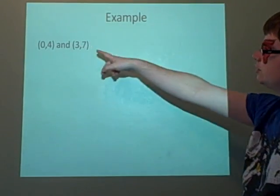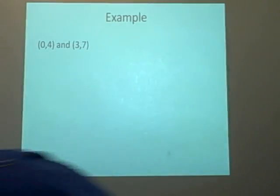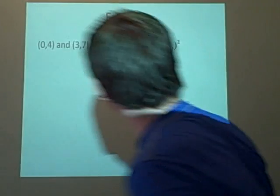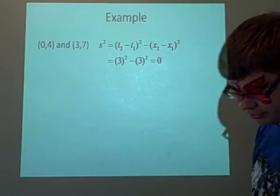For the events (0,4) and (3,7), we find s² = (3)² - (3)² = 0, so this is null. There is no velocity between the two events.